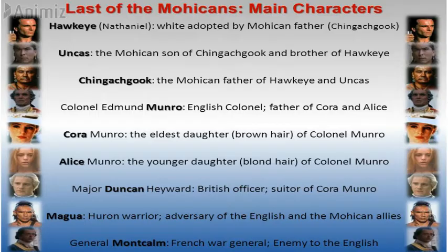Uncas was romantically involved with another character in the novel, which led to his unfortunate demise. Next we have Magwa, the antagonist — the main villain. He is the leader of the Huron tribe. Unfortunately, he was humiliated by one of the characters in this novel, which led to his vengeance and eventually to the slaughter of British soldiers during their retreat.